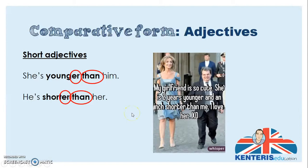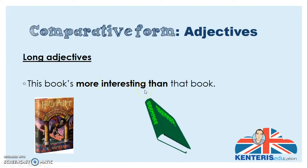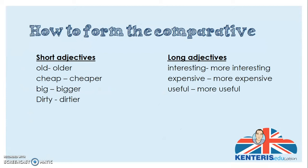What about long adjectives? Take 'interesting' — that's quite a few syllables, so it's a long adjective. We actually say 'more interesting than that book.' So this book, which is a Harry Potter book, is more interesting than that book, which is a grammar book. I think you all agree. Again, for long adjectives, we use 'more' before the adjective, rather than adding -er.